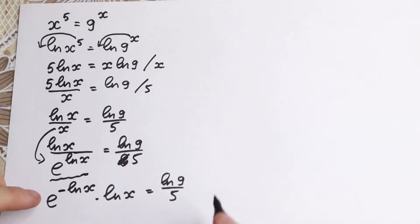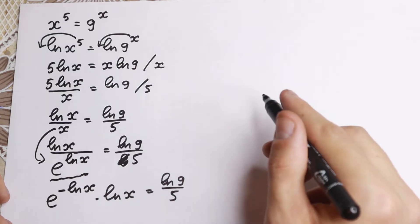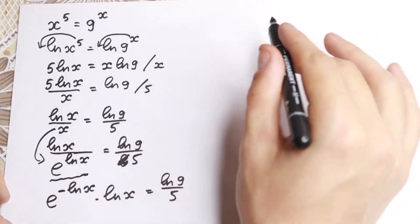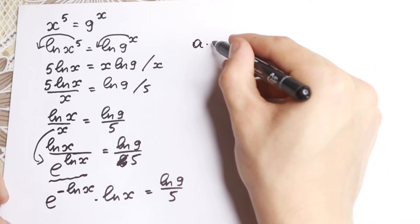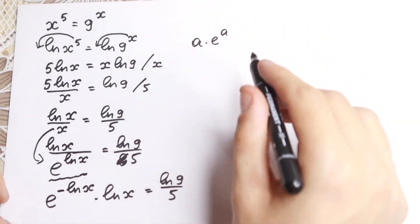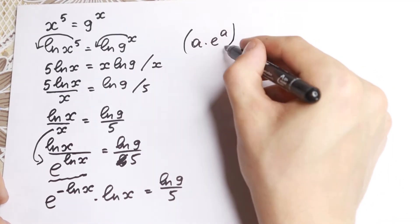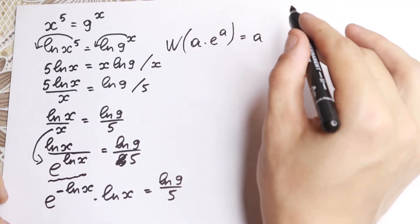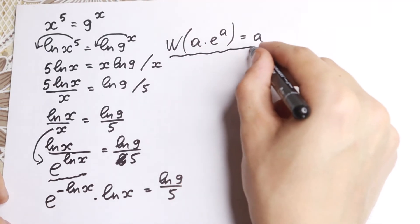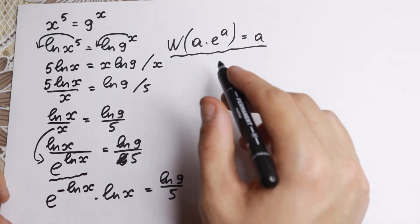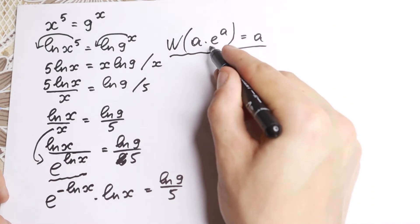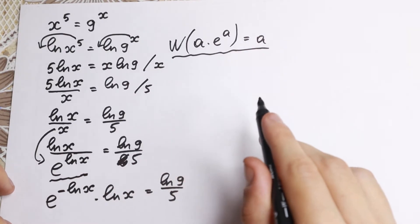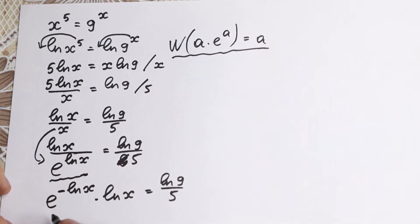Now let's talk a little about the Lambert W function and how it works. If we have some expression a times e to the power a, and we apply the Lambert W function to that expression, we get a. This is the main rule. We need the same a appearing both as the coefficient and as the exponent alongside e.